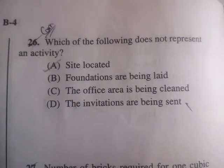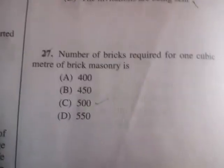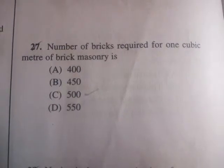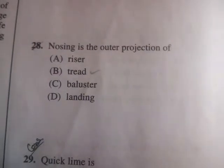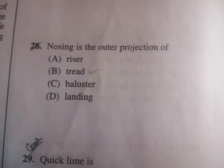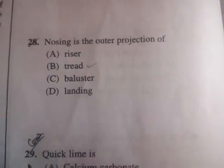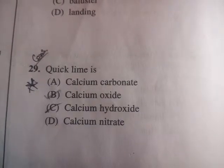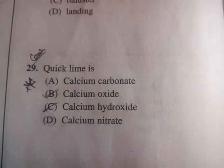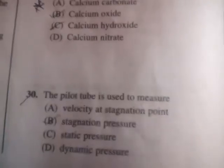Next question: the number of bricks required for one cubic meter of brick masonry is C: 500. Next question: nosing is the outer projection of the — riser, tread, plaster, or landing? The correct answer is B: tread. Next question: quick lime is — calcium carbonate, calcium oxide, or calcium hydroxide? The correct answer is: calcium oxide.